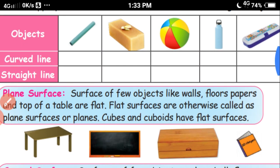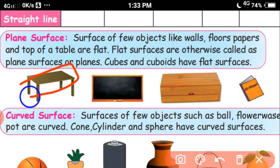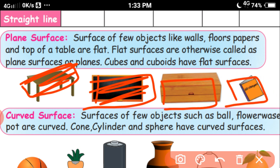Some objects have plain surfaces and some objects have curved surfaces. See this table — the face is flat. And this blackboard has flat surfaces. Box and book — they have plain surfaces. Surfaces of objects like walls, floors, papers and tops of tables are flat. Flat surfaces are otherwise called plain surfaces or planes. Cubes and cuboids have flat surfaces.